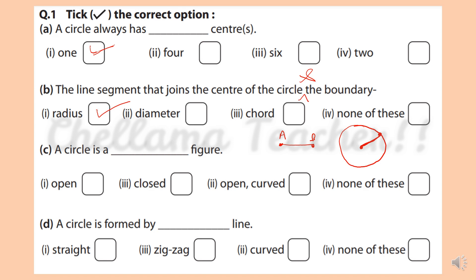A circle is a dash figure — is it an open figure, closed figure, curved, or none of these? It's a closed figure. A circle is formed by straight line, zig-zag line, curved line, or none of these? Curved line.